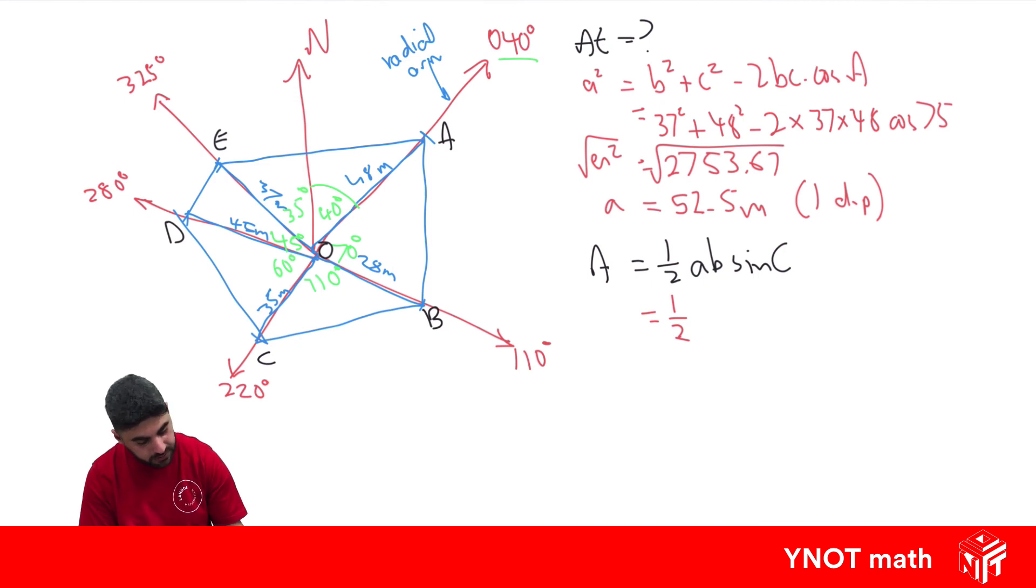So we're going to have ½ × 37 × 48 × sin(75). Put all that in the calculator, you're going to get 857.7 meters squared, correct to one decimal place.